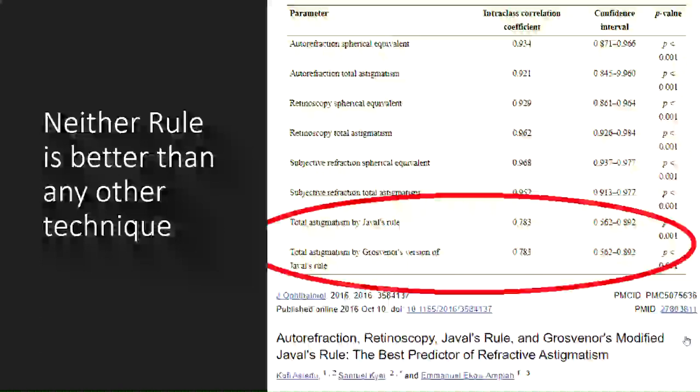But what about overall, how often do we use this? In reality, neither Javal's rule nor the simplified rule is more accurate than actually measuring the astigmatism in the spectacle plane. Autorefraction, retinoscopy, and subjective refraction are all far superior at measuring the true spectacle astigmatism than any prediction rule because we can't measure the internal astigmatism. So for that reason, we primarily do not use either of these rules in the clinic and rather focus on what we can actually measure, such as autorefraction, retinoscopy, and subjective refraction.